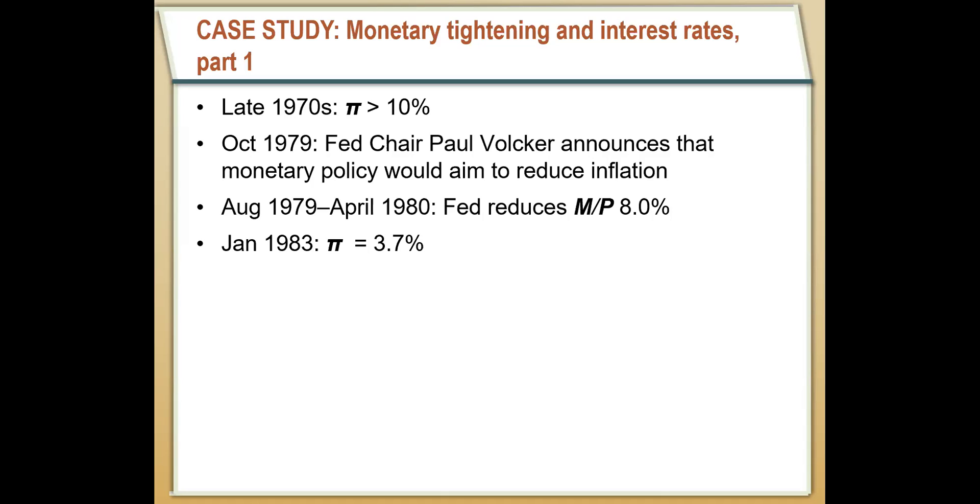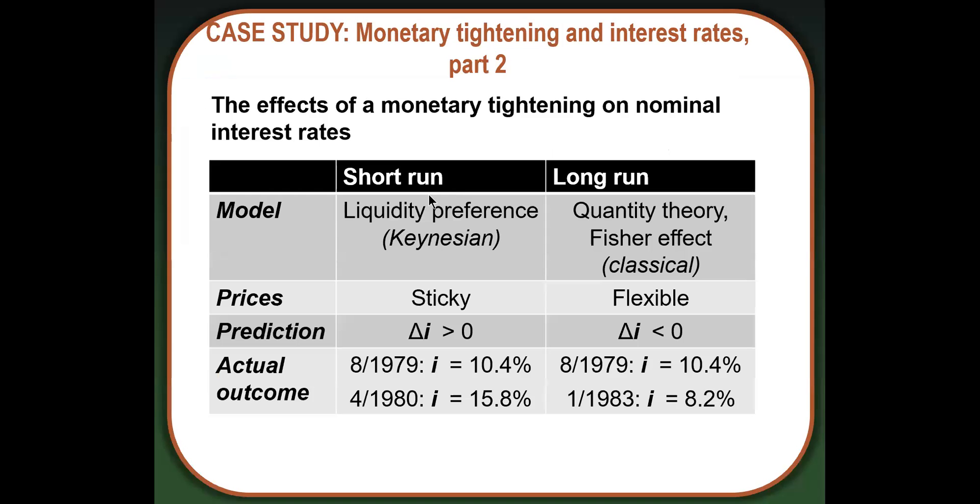And when they did that, inflation went down really significantly. It was about 11 or 12%, like we've talked about. And by 1983, it was below 4%. Inflation fell drastically. And so we can see how this plays with the theory of flexible prices that we've had up to this point. With this theory of liquidity preference, we have that prices are sticky. And so when the money supply decreases, it should raise the nominal interest rate. And that's exactly what we saw. We saw that when the Fed cut the money supply, interest rates went from about 10% in 1979 to over 15% about six months later in 1980.